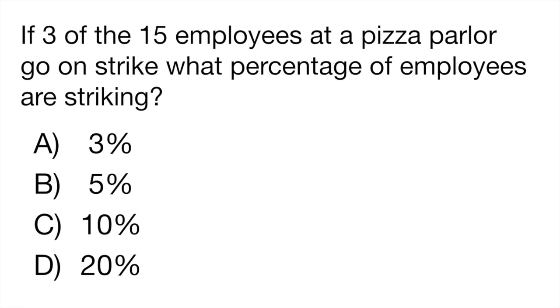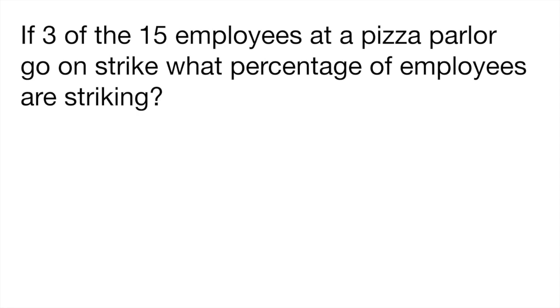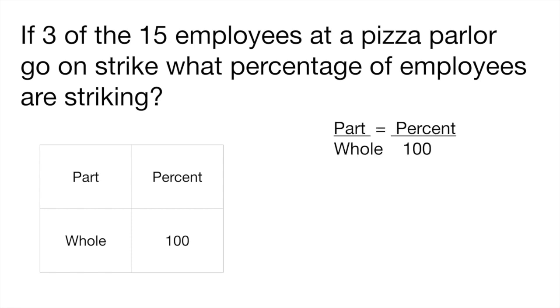Question seven. If three of the 15 employees at a pizza parlor go on strike what percentage of employees are striking? So whenever I do percentage problems I always like to write a little grid like this. And the reason is that whenever they ask you any percentage question they are going to give you three pieces of information and you have to find the fourth. So if you do this little grid and you put in your numbers in each of the boxes it's going to be really easy to solve percentage questions. Why? Because this is actually equal to this equation. So the part divided by the whole is equal to percent divided by 100.